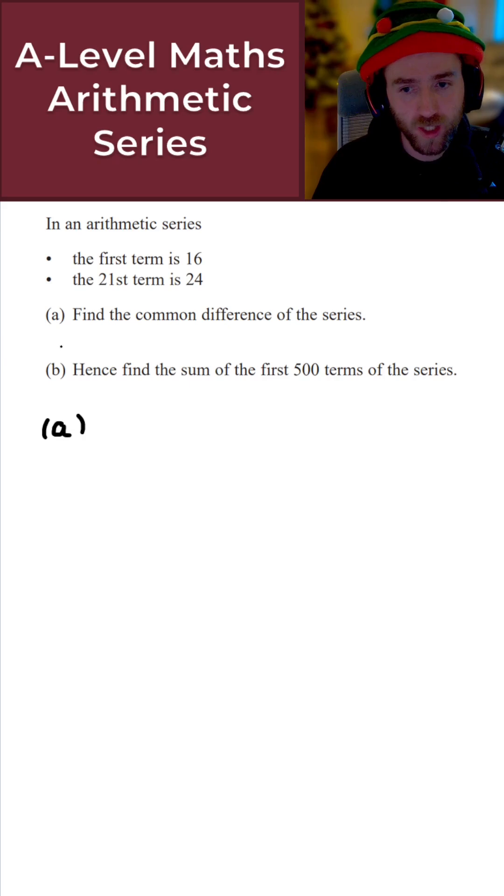For the first part of this question, part a, all we want to do is find the common difference of the series. Now what I know here is for a given arithmetic series, the first term is 16 so a is 16, and the 21st term is 24 so u₂₁ is equal to 24.